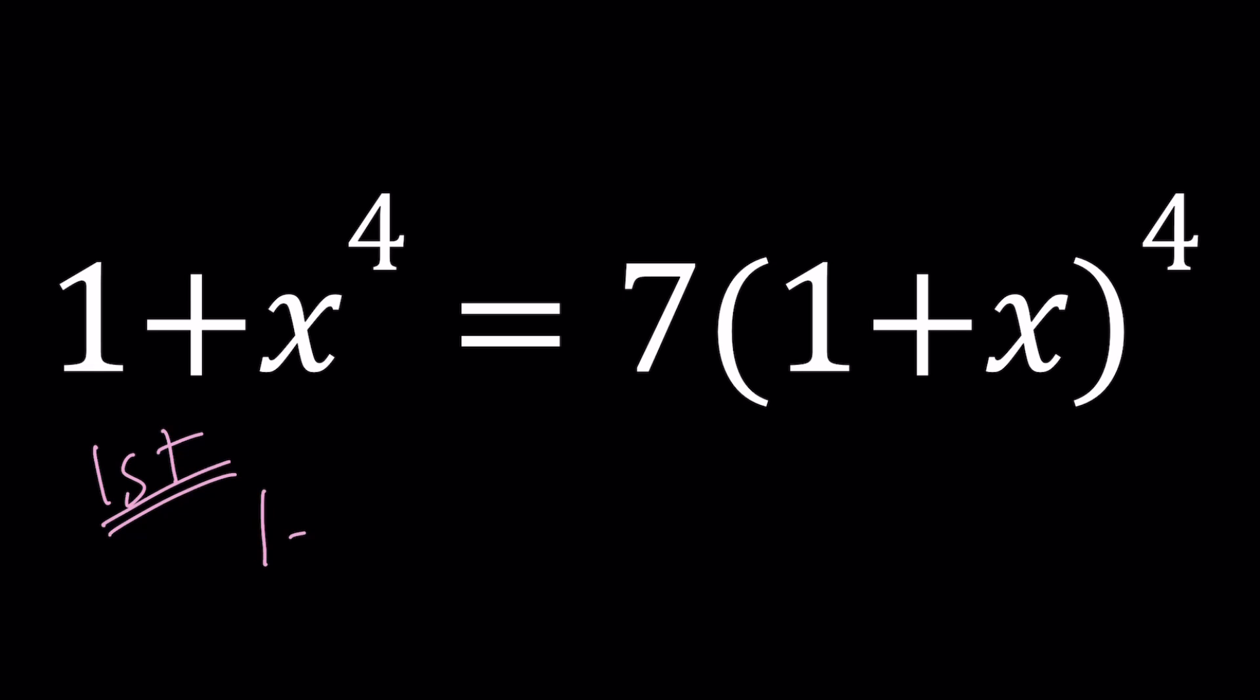So for my first method, you probably already guessed, I'm going to expand 1 plus x to the 4th power using the binomial theorem. But x plus 1 to the 4th power is something that we are more familiar with, and they are equal. So instead, I'm going to be using x plus 1 to the 4th power.